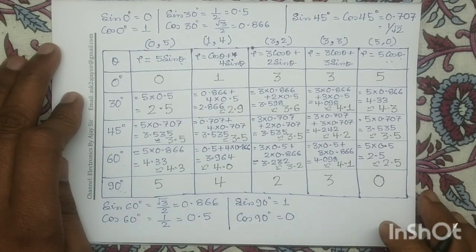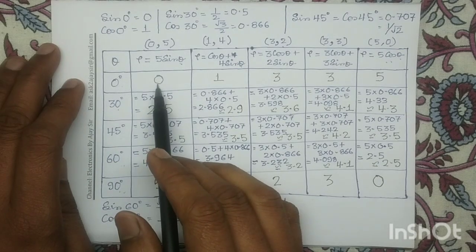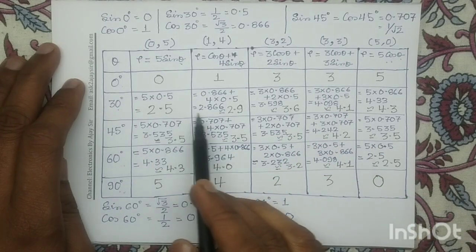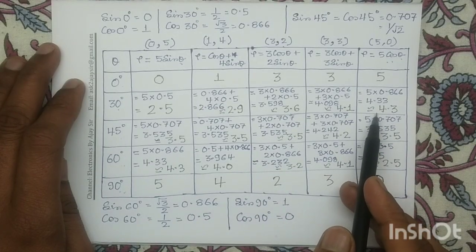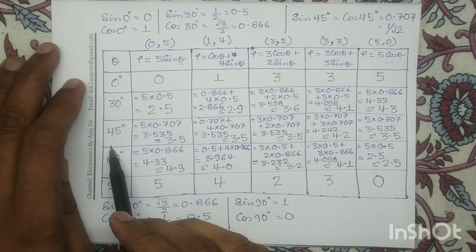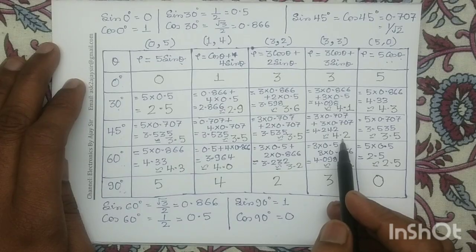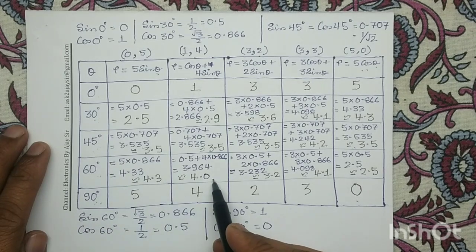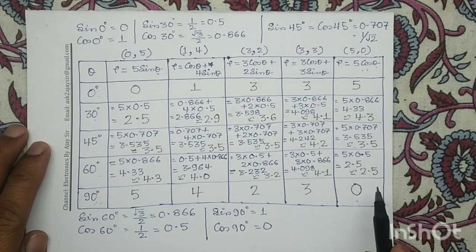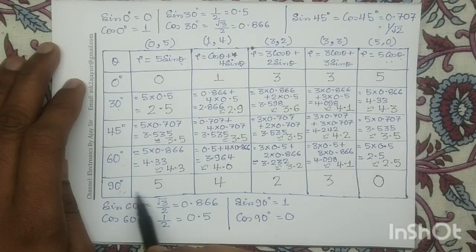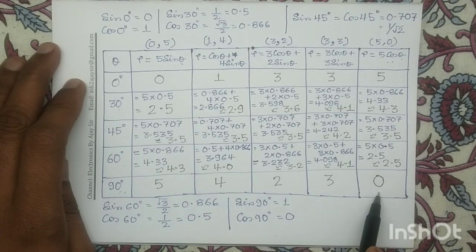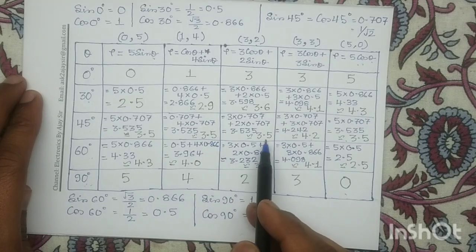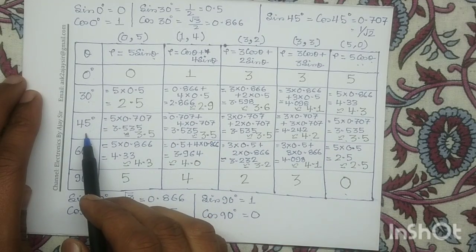Now we will check the voting. For θ = 0°: ρ values 0, 1, 3, 3, and 5 each got 1 vote (with 3 getting 2 votes). For θ = 30°: values 2.5, 2.9, 3.6, 4.1, and 4.3 each got 1 vote. For θ = 45°: ρ = 3.5 got 4 votes, and 4.2 got 1 vote. For θ = 60°: values 4.3, 4.0, 3.2, 4.1, and 2.5 each got 1 vote. The maximum vote is obtained by ρ = 3.5, with the corresponding θ = 45°.